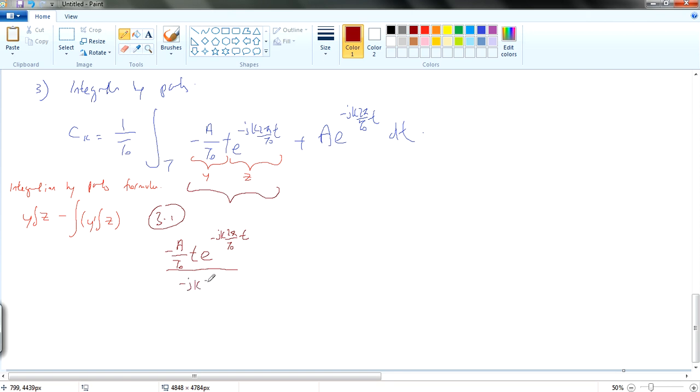T divided by minus jk 2π T0. And then we minus, this is differentiation of y, so therefore we clear away this t only, the coefficient t I mean. We get the coefficient only and then the same thing, we get the integration of z.